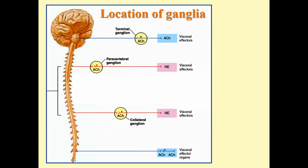For the parasympathetic system, ganglia are located inside the walls of effector organs — called intramural — meaning preganglionic fibers must travel the full distance from the brain or spinal cord to the organ. Therefore, parasympathetic preganglionic fibers are long, while postganglionic fibers are very short, typically no more than a few millimeters.